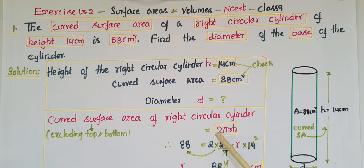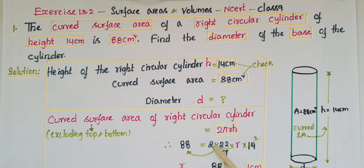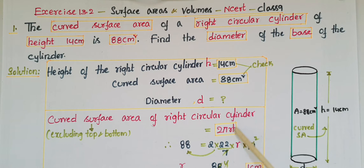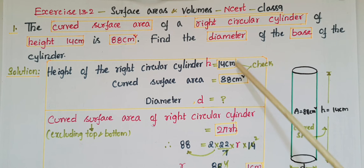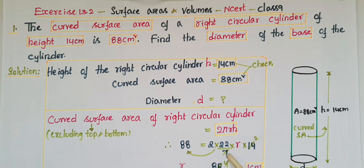The curved surface area of a right circular cylinder formula is 2πrh. So 88 equals 2 into π, where π is 22/7, into r (unknown) into h which is 14. Both measurements are in centimeters, so r equals 88 divided by 2 into 22 into 2.